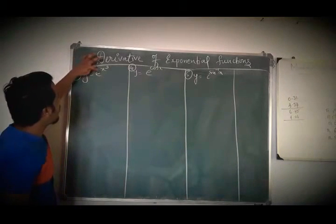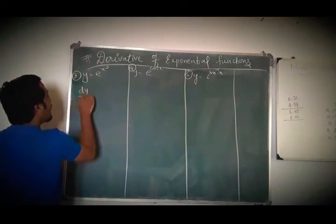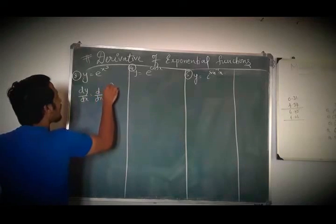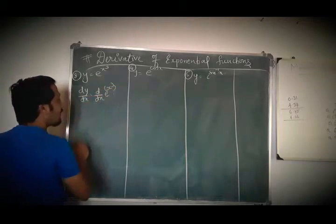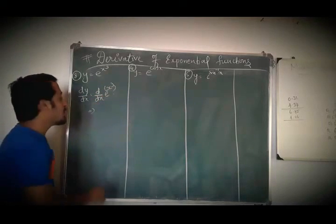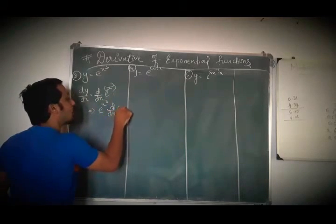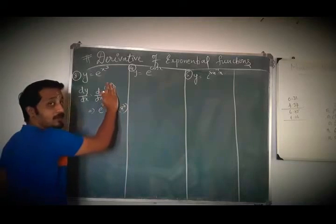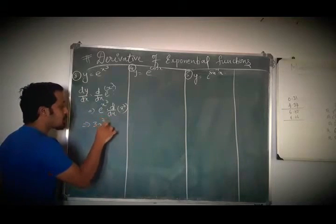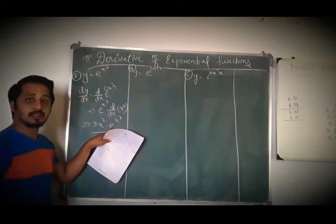Third question: y = e^(x²). How to find the derivative? dy/dx = d/dx of e^(x³). That is e^(x³) into derivative of x³. In place of x I have x³, that is why I take the derivative of x³, which is 3x². So dy/dx = 3x² · e^(x³).